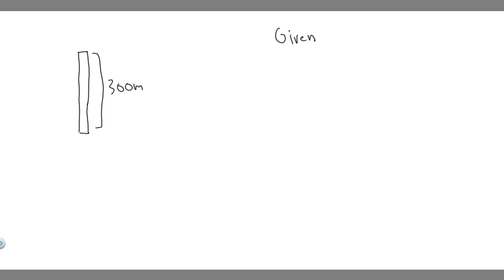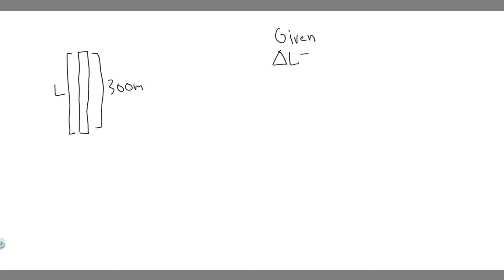So imagine this right here is going to be the Eiffel Tower and they're telling us it's 300 meters tall. What we're trying to find is basically how much the height is going to change. We want to just pretend this is just length L. What we're trying to find is delta L — the change in length.